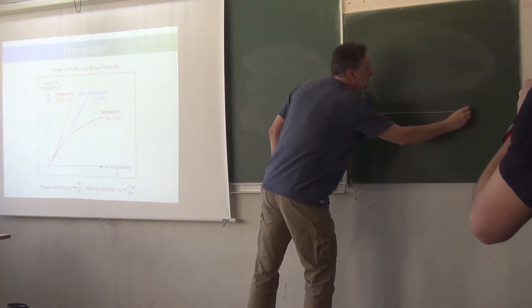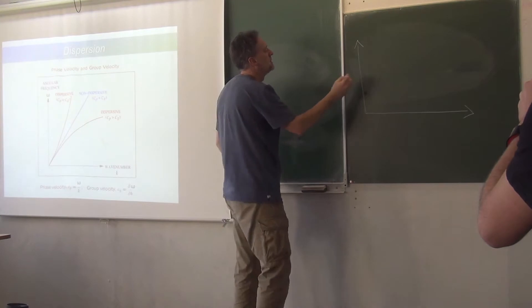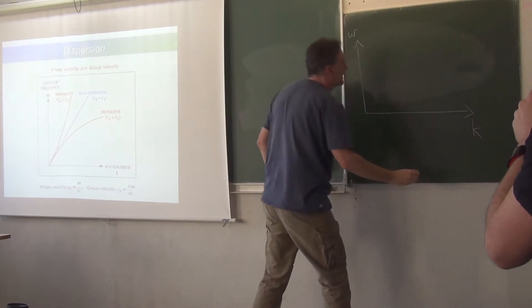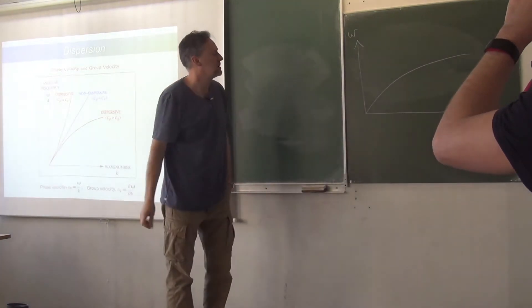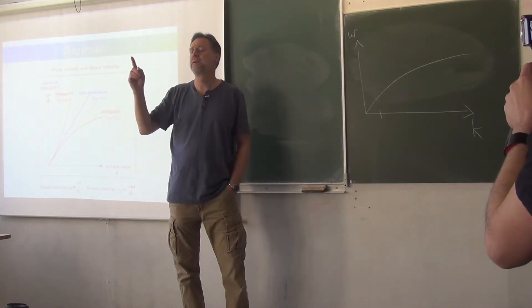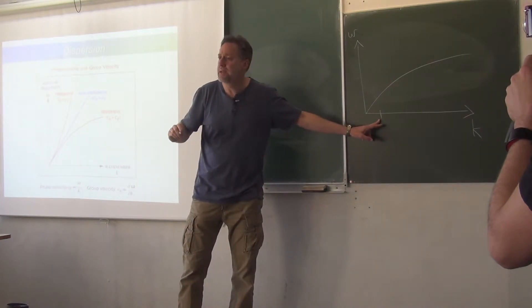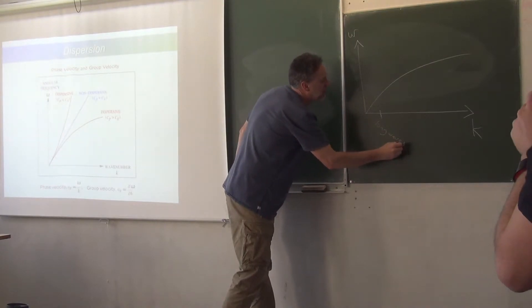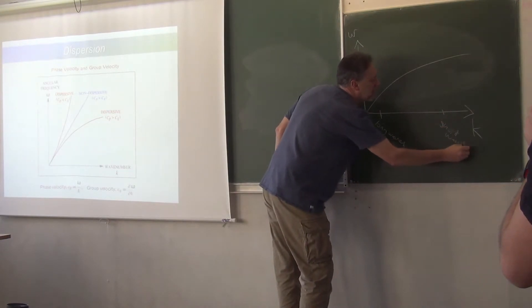Let's just draw a dispersion diagram for deep water. So, here we have omega against k. And we'll draw a dispersion curve like that. So, as I said, if k is small, then k is 2 pi over lambda, 2 pi over the wavelength, so if k is small, lambda is big, so these are long waves. And if k is big, then we have short waves.